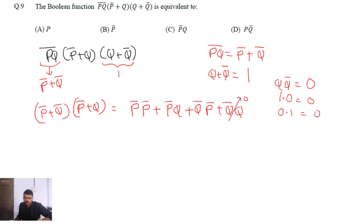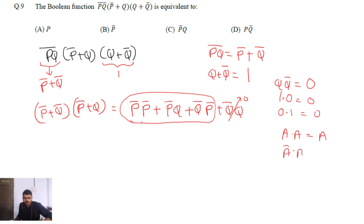So now we have p̄·p̄ + p̄q + q̄p̄. From boolean algebra, a·a = a, so p̄·p̄ = p̄. We can replace the first term with just p̄, giving p̄ + p̄q + q̄p̄.